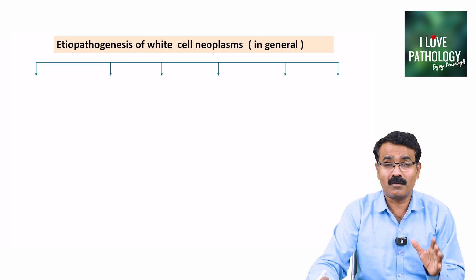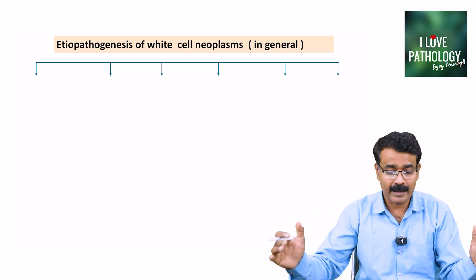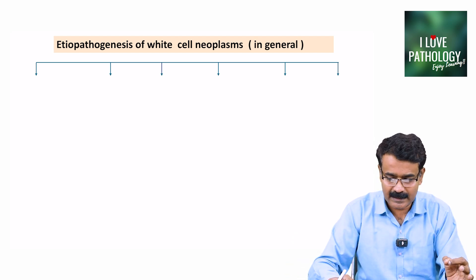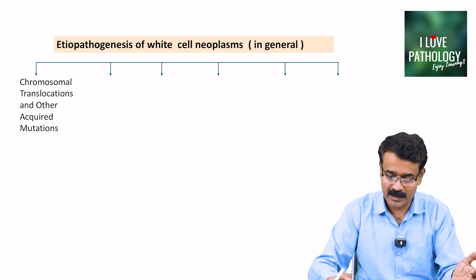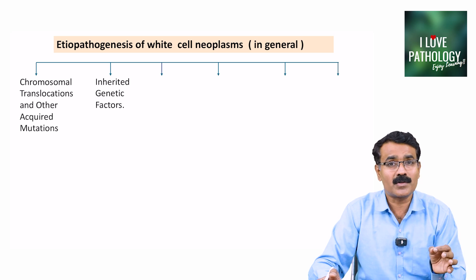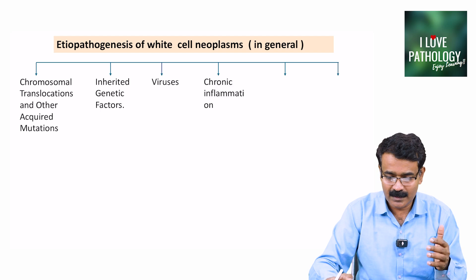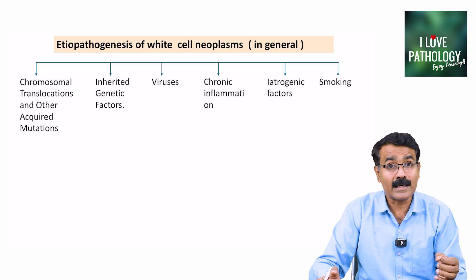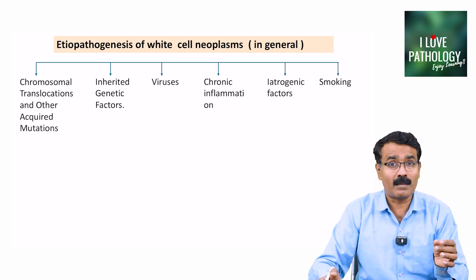This etiopathogenesis covers all lymphomas, leukemias, and histiocytosis in general. The causes are broadly divided into: chromosomal translocations or other acquired mutations, inherited genetic factors, viruses, chronic inflammation, iatrogenic factors, and smoking, which is also an independent risk factor for the development of white blood cell neoplasms.